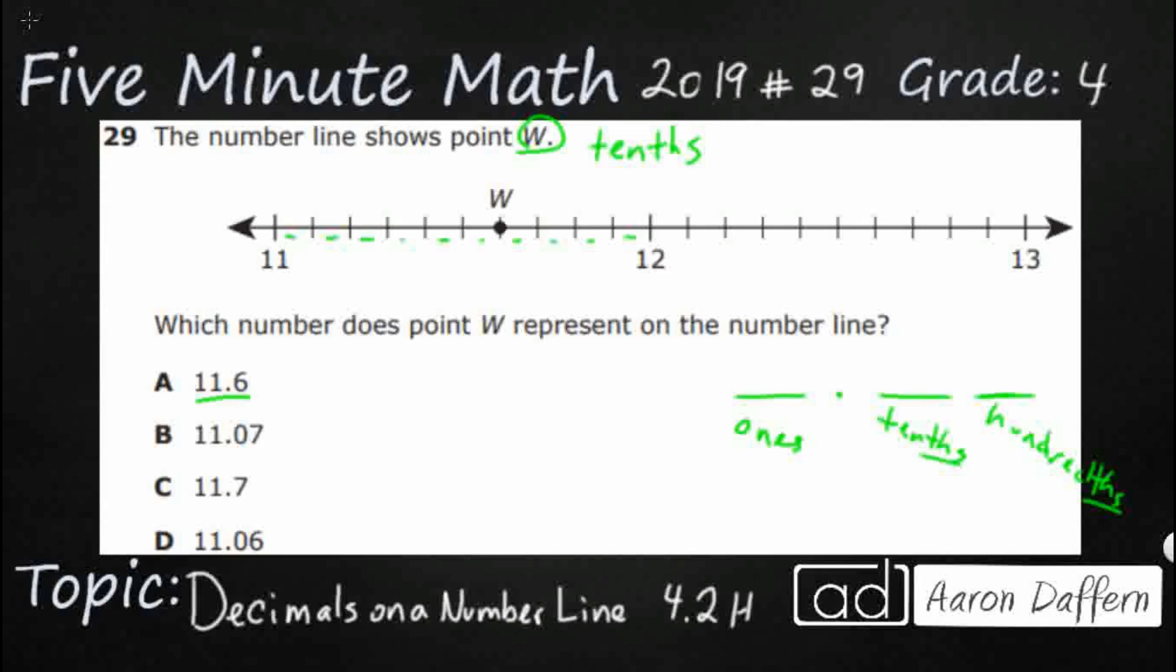So eleven, we're going to think this is like eleven point zero right there. And so we then we've got eleven point one, eleven point two, eleven point three, eleven point four, eleven point five, eleven point six. So there's my eleven point six. It looks like we found our W immediately right there. Eleven point six.